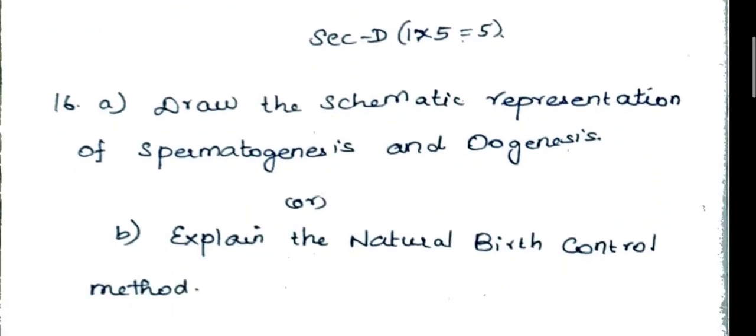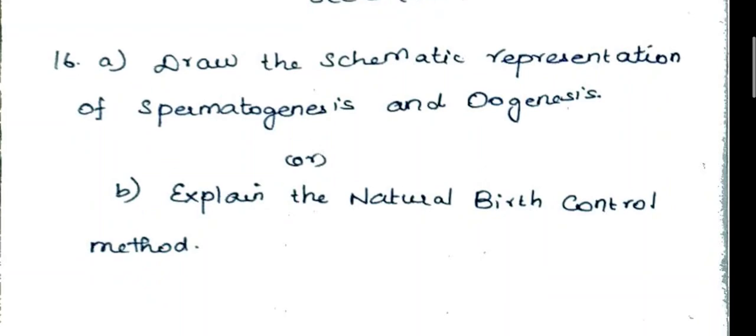22nd question: explain the seminiferous tubules. 4th question: draw the schematic representation of spermatogenesis and oogenesis, explain natural birth control methods.